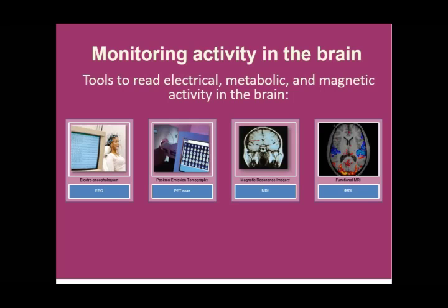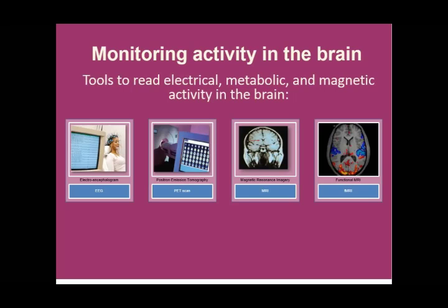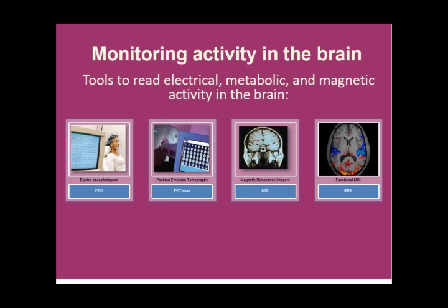The PET scan — positron emission tomography — involves injecting some radioactive glucose into your blood. That sounds horrible, but it's a low dose of radiation, and PET scans are generally used because we're worried about something being wrong or we're doing it for research. Your brain operates exclusively on glucose — it can't use stored fat; it needs the free-floating glucose in your blood to fuel it. By injecting you with a radioactive dose of glucose and having you do a task inside the PET scan tube, the parts of your brain most active during the task will light up. We use computers to colorize it, and you end up with a PET scan.